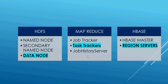Next is HBase. As we discussed, it's a distributed column-oriented database. It has two components: HBaseMaster and RegionServer. HBaseMaster is responsible for negotiating load balancing across all region servers and maintaining the state of the cluster. Please remember, it is not part of the actual data storage or retrieval path. RegionServer is deployed on each machine and hosts data and processes input/output requests.